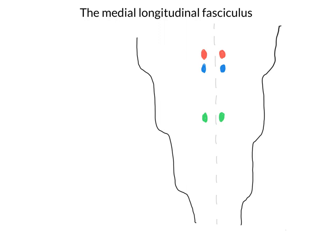Furthermore, I'm going to draw on a sensory nucleus. The nuclei we've drawn so far have been motor nuclei involved in driving extraocular muscles. But in yellow, I'm going to draw on the vestibular nucleus. There's one on each side — a left and a right vestibular nucleus. These nuclei are involved in receiving information about the position of the head from the vestibular apparatus in the inner ear.